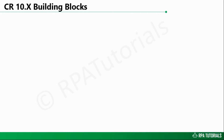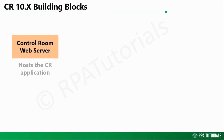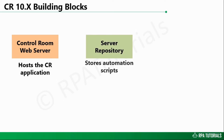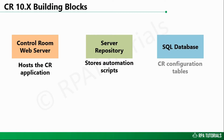There are three fundamental building blocks of the new Control Room. First, the web server is where the Control Room is hosted. Second, the server repository is where all automation scripts are uploaded from development clients and downloaded onto runtime clients at the time of execution. And the third block is the SQL Database, which provides RDBMS to store all Control Room configuration data like schedules, user details, roles, etc. These three are the fundamental and necessary building blocks of the Control Room.